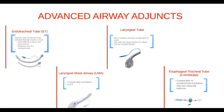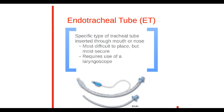Now we will cover the advanced airway adjuncts, which include the endotracheal tube, laryngeal mask airway, laryngeal tube, and esophageal tracheal tubes. The ET tube is an advanced airway alternative — a specific type of tracheal tube inserted through the mouth or nose. It is the most difficult airway to place; however, it is the most secure airway available. Only experienced providers should perform endotracheal intubation. This technique requires the use of a laryngoscope.